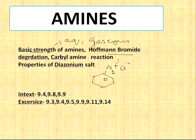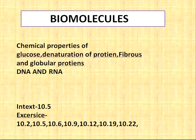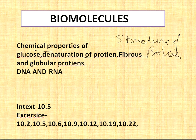Last but not least is Biomolecules, which you have to study thoroughly from NCERT only — line by line it will come from NCERT. Important topics include the chemical properties of glucose, denaturation of protein, fibrous and globular proteins, and the structure of protein, which is also a good topic. The difference between DNA and RNA will 100% come in the exam. Do the in-text and exercise questions and do not skip this chapter.